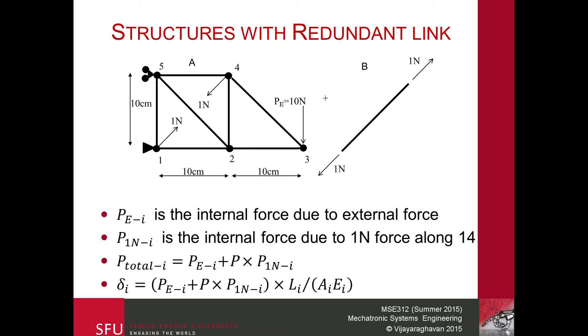real deflection or the deformation of all of these links where i denotes what the links such as 1, 2, 3 and so on is going to be P_Ei plus P times 1 Newton times the whole thing times L divided by Ae. So this will give you the total deformation of each of these links when you substitute i equal to say 1, 2, 5 and so on and so forth.